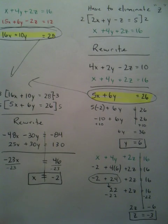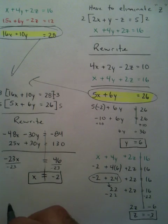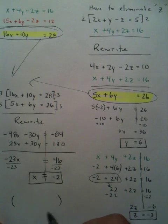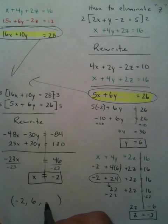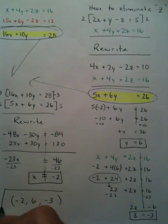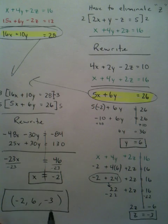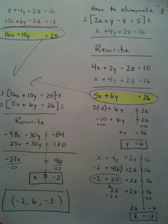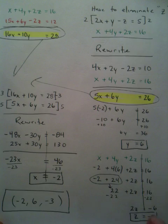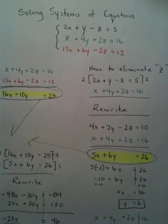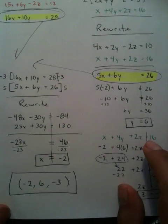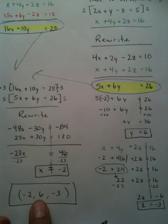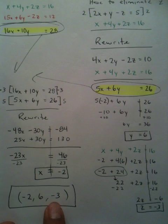We have x, we have y, we have z. Our final answer is negative 2, 6, and negative 3. This means the three equations that we originally started with intersect at the coordinate point (negative 2, 6, negative 3) in three-dimensional space.